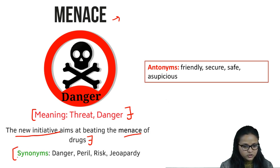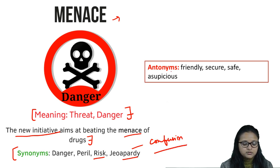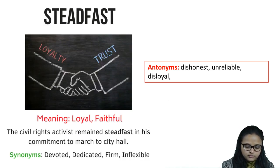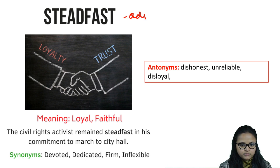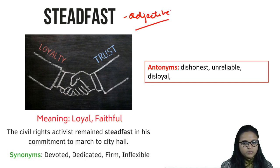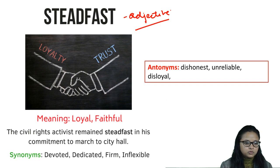Synonyms for menace: danger, peril, risk, or jeopardy. Antonyms: friendly — something that is not dangerous is friendly — secure, safe, and auspicious. The next word is 'steadfast.' Steadfast is an adjective that describes the quality of a person who is very loyal, trustworthy, or faithful — someone who is always committed to his promises and words.